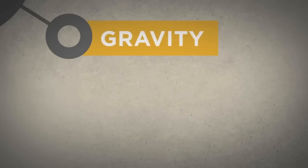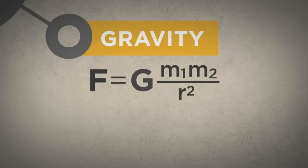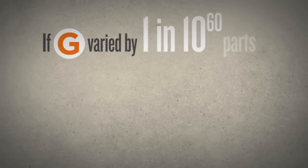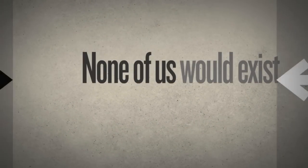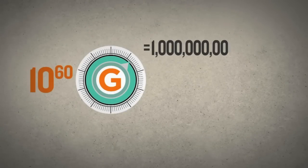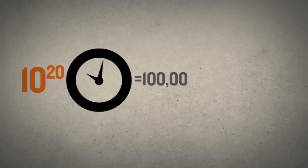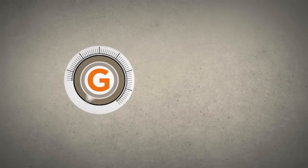Consider gravity, for example. The force of gravity is determined by the gravitational constant. If this constant varied by just 1 in 10 to the 60th parts, none of us would exist. To understand how exceedingly narrow this life-permitting range is, imagine a dial divided into 10 to the 60th increments — compare it to the number of cells in your body, or the number of seconds that have ticked by since time began. If the gravitational constant had been out of tune by just one of these infinitesimally small increments, the universe would either have expanded and thinned out so rapidly that no stars could form and life couldn't exist, or it would have collapsed back on itself with the same result.